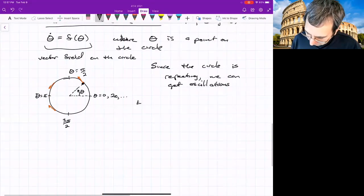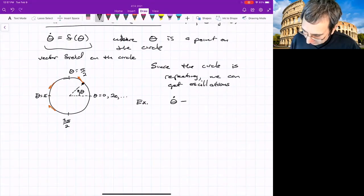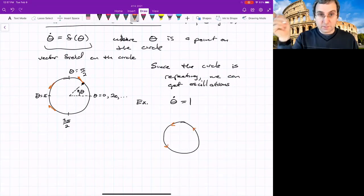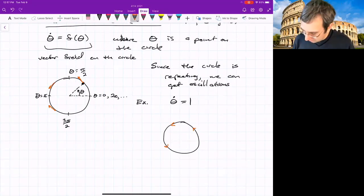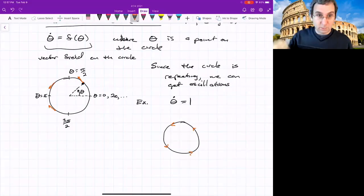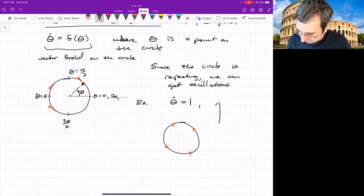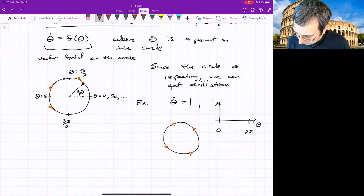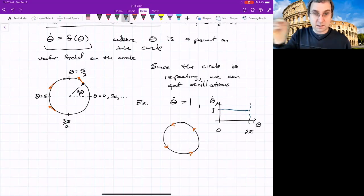So maybe that doesn't excite you very much, but this is the most basic way to get a cycle. Since the circle goes back on itself, we can get oscillations. So for example, if we had theta dot equals one, then if we were to draw arrows, we've got arrows always going counterclockwise, taking us back to the beginning. And then we just keep going around and around. The usual way we've been plotting things would be like zero, two pi, here's theta dot, and it's one.